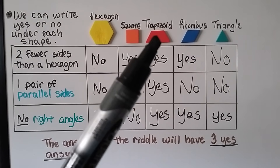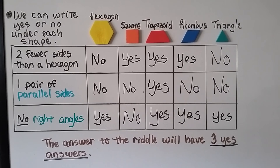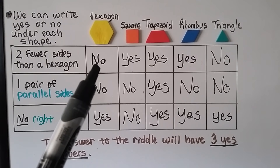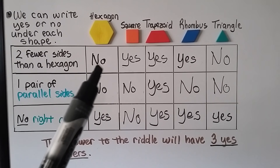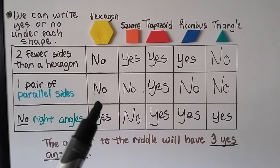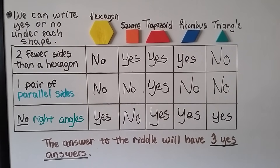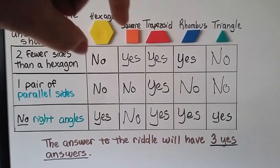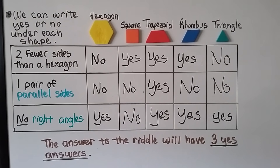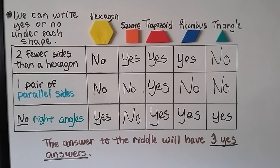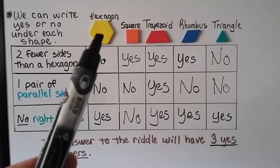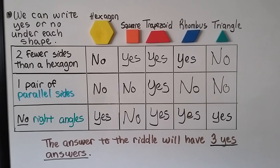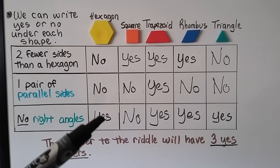We put our hexagon, square, trapezoid, rhombus, and triangle along the top and write yes or no under each shape. Does a hexagon have two fewer sides than a hexagon? No, it is a hexagon. Does it have one pair of parallel sides? It has three pairs — so no. How about no right angles? Yes, a hexagon has no right angles.